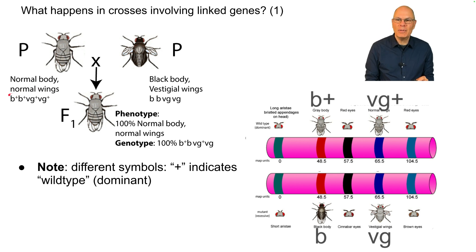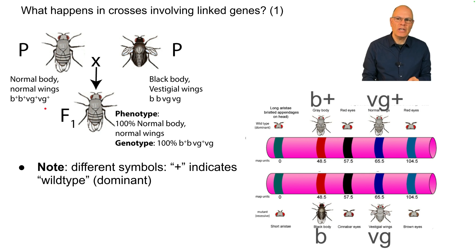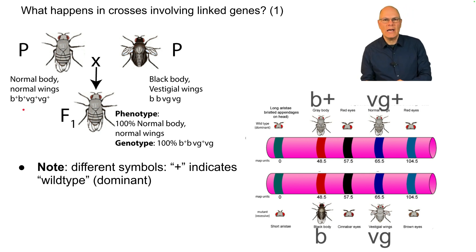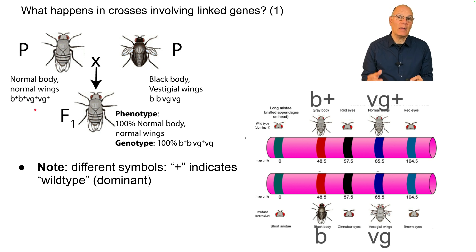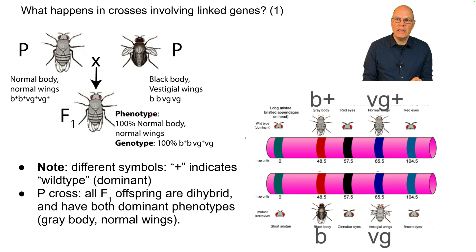We have B+, B+, VG+, VG+. In this system in non-Mendelian genetics, a plus sign indicates the wild type or the dominant allele. If you have a symbol — which can be more than one letter — without a plus sign, that indicates the recessive allele.